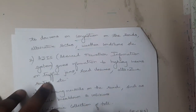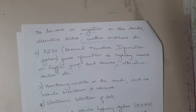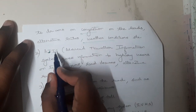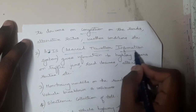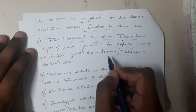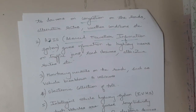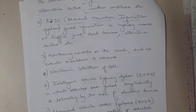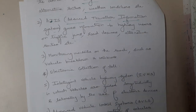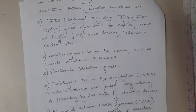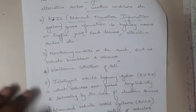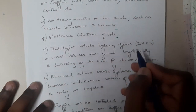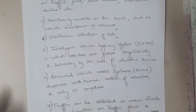Based on congestion on the road, signals are managed accordingly. The second application is ATIS — Advanced Travel Information System — which gives information to highway users on traffic, road conditions, and everything. It is like an FM service giving information to travelers on that particular road. The third application is monitoring incidents on the road — whenever a breakdown, collision, or any bad event occurs, this system identifies it on that road. The fourth application is electronic collection of tolls.